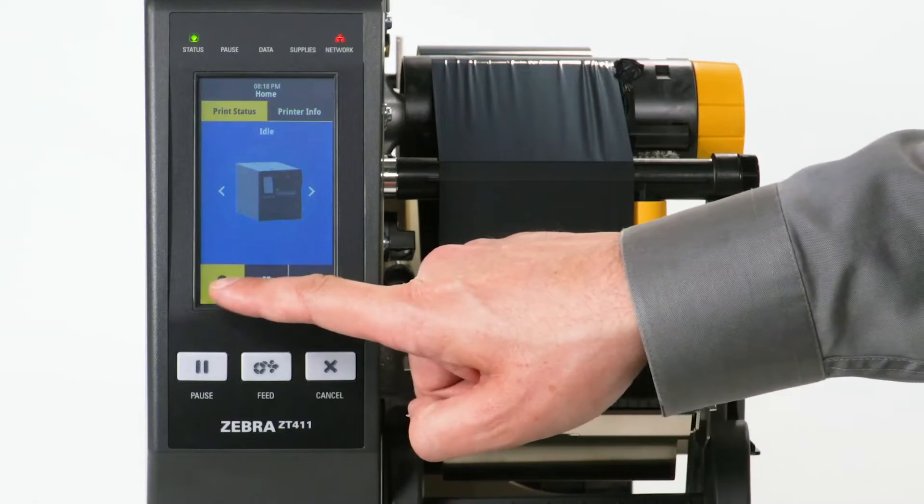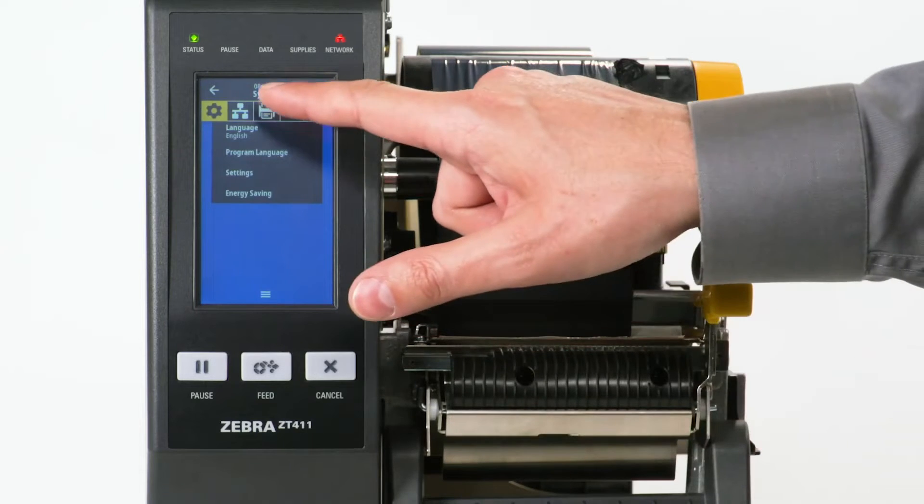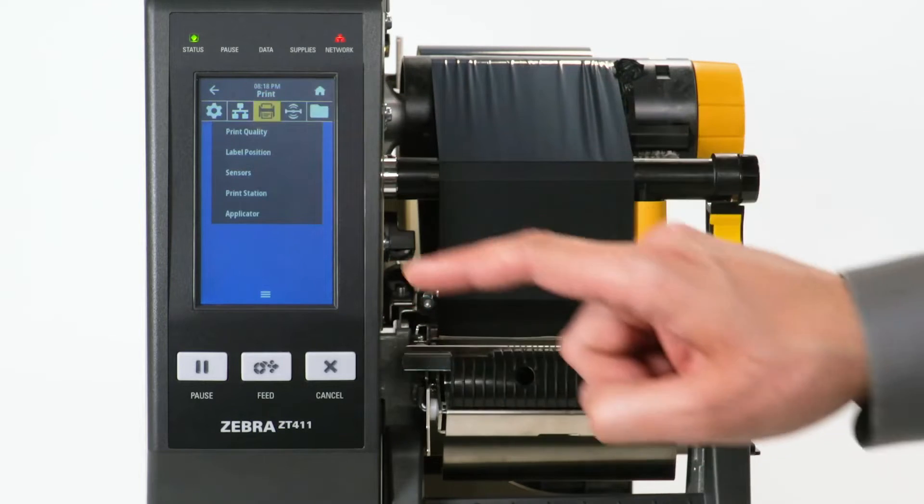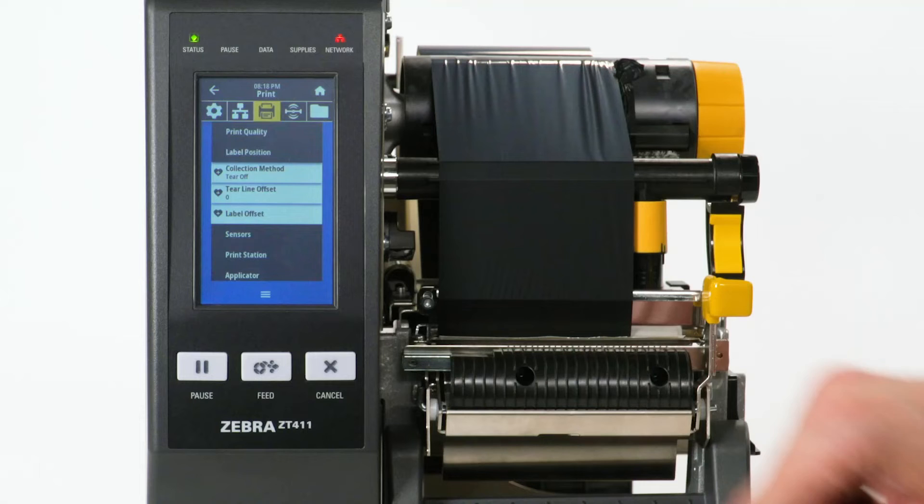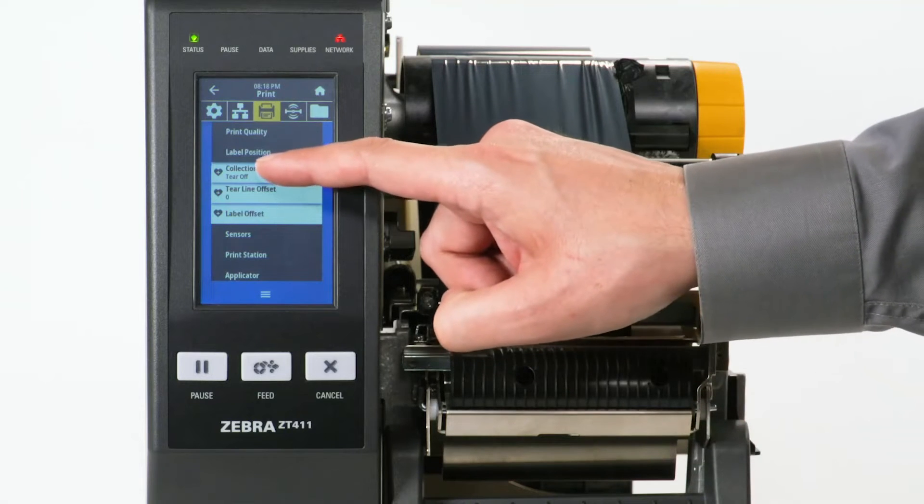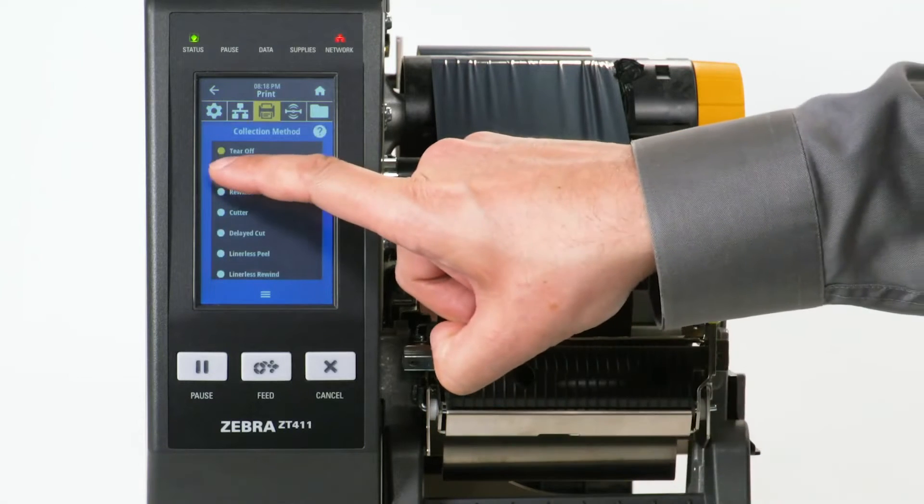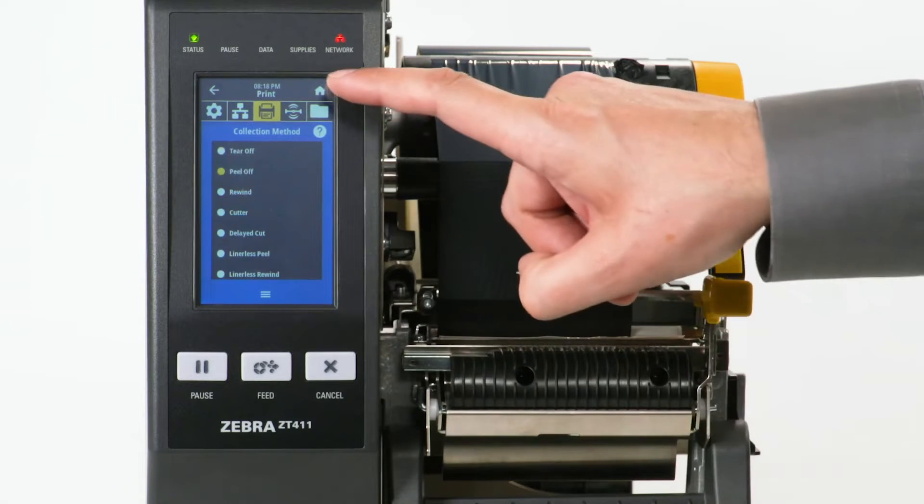Select Menu. Select Printer. Select Label Position. Select Collection Method. Select Peel Off. Select Home.